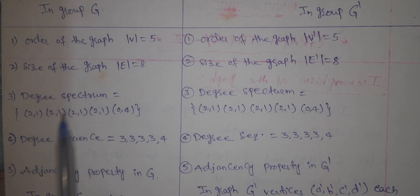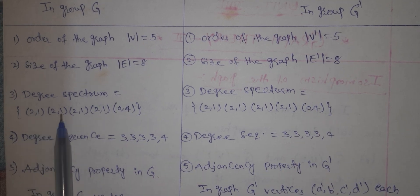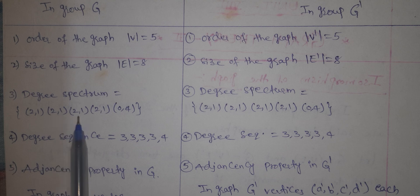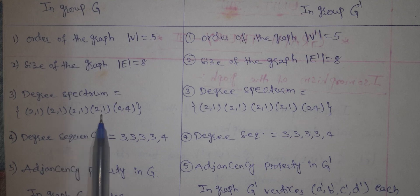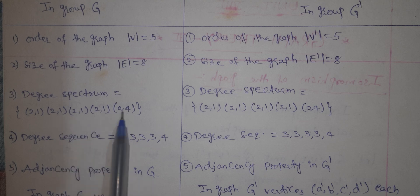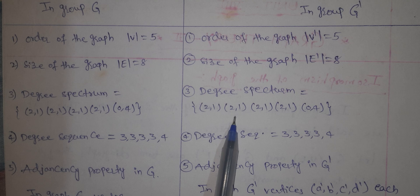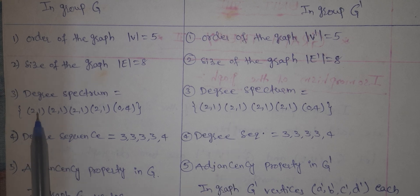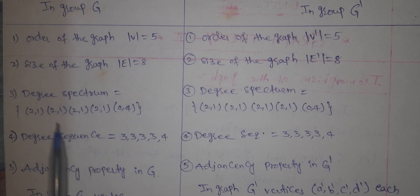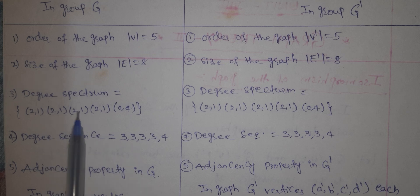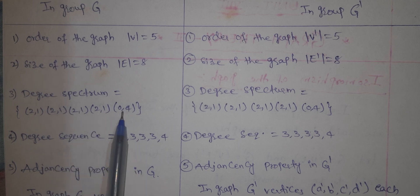The degree spectrum is: A — 2, 1; B — 2, 1; C — 2, 1; D — 2, 1; E — 0, 4. Now adding the degrees: for A, B, C, D each gives 2 plus 1 equals 3. For E, 0 plus 4 equals 4.